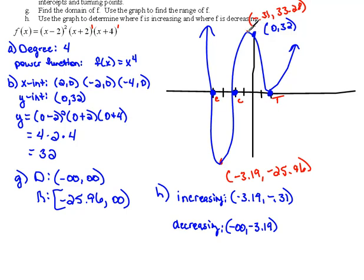Then at negative 0.31, it turns around and it goes down to an x value of 2. So that's decreasing. So negative 0.31 to 2, we're decreasing.